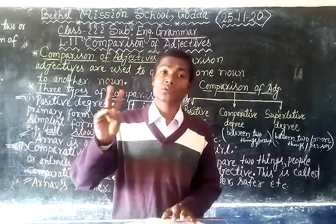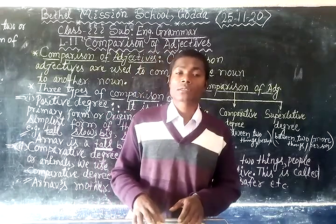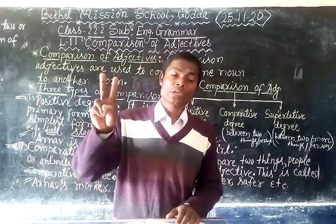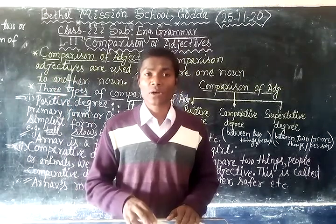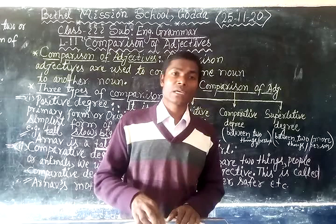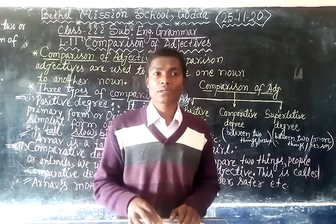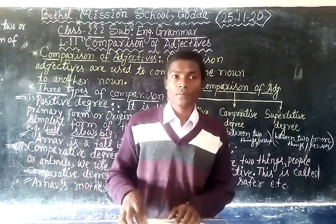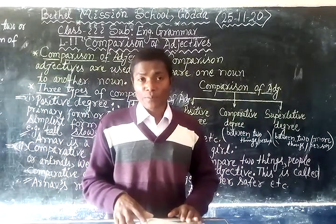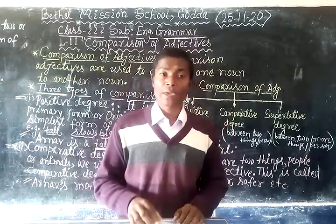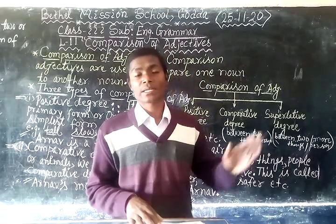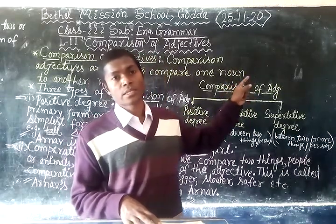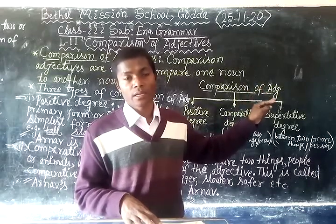The word 'comparison' means to compare. Comparison of adjectives are used to compare one to another — it can be a person, an animal, or a thing. There are three types of comparison of adjectives: the first is positive degree, the second is comparative degree, and the third is superlative degree.